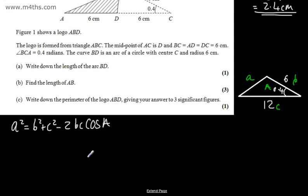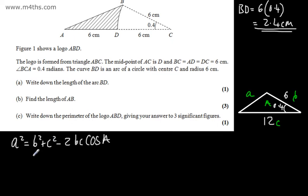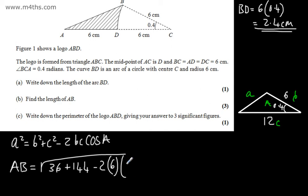If we look at this we can say that this length AB is going to be equal to the square root of B squared which is 36 plus C squared which is 144, then minus 2 lots of B which is 6 multiplied by C which is 12 multiplied by the cosine of 0.4 radians. Make sure your calculator is in radians mode.